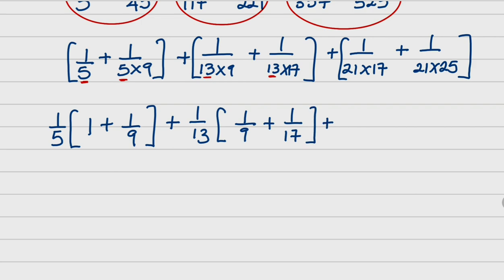Then, plus — if you check very well, you can see that here we have 21 and we have 21 here. So we can bring out 1 over 21, then into 1 over 17 plus 1 over 25.